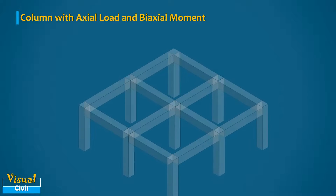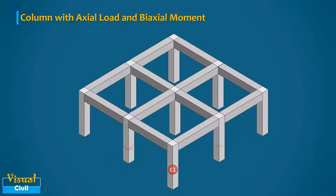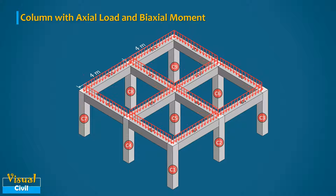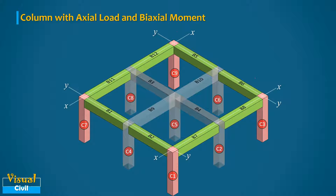Consider a typical building frame having 9 columns and 12 beams subjected to uniformly distributed load with 4-meter center-to-center column spacing. In this frame, consider a corner column C1, which is connected to beam B7 and B2 along the x-axis and y-axis respectively.